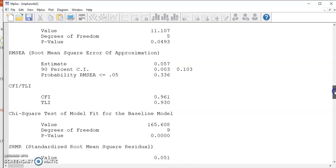Below the chi-square statistic, we have the RMSEA. The value is 0.057, lower than the guideline value of 0.06. The upper bound of the 90% confidence interval is somewhere around 0.10. So this index also suggests a good model fit.